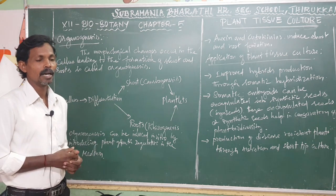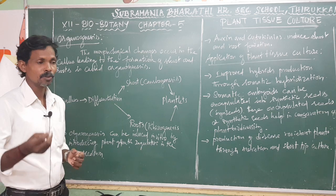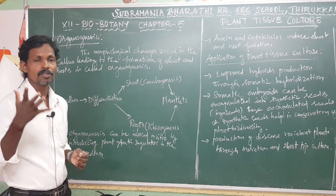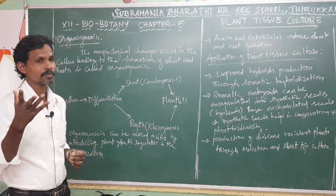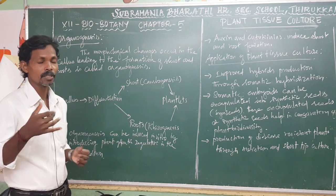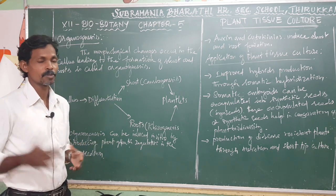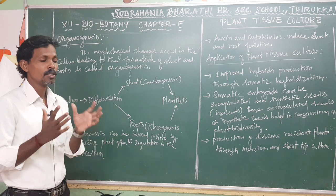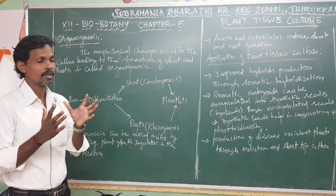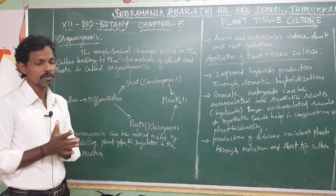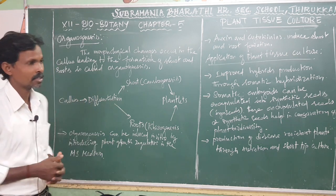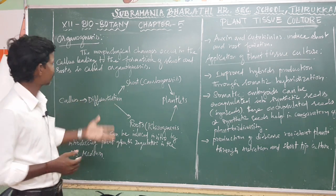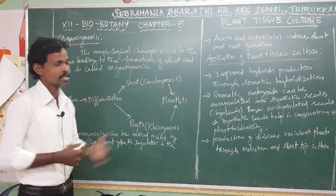It leads to the production of a shoot. Shoot column and root column — that is the shoot tissue system. The root system is differentiated. So that means organogenesis.